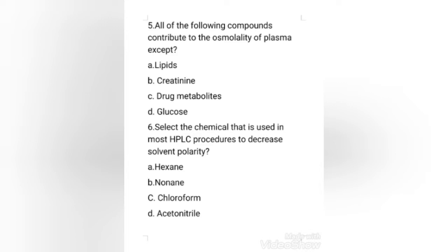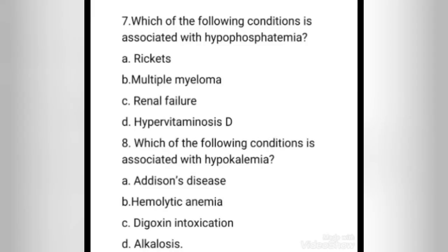All the compounds mentioned have nonpolar properties because most HPLC is reverse phase. Hexane and nonane are too nonpolar. Acetonitrile is more polar and less toxic than chloroform, and along with methanol is a common polarity modifier for HPLC. So the right answer is option D, acetonitrile.